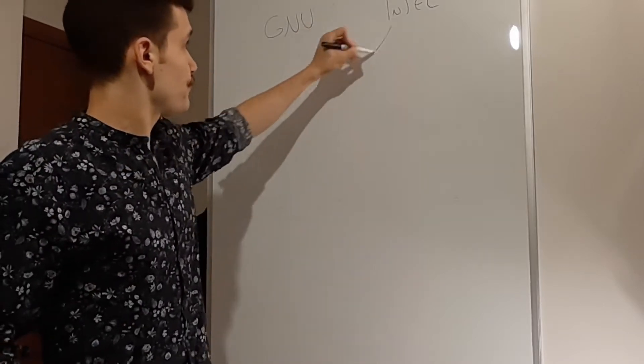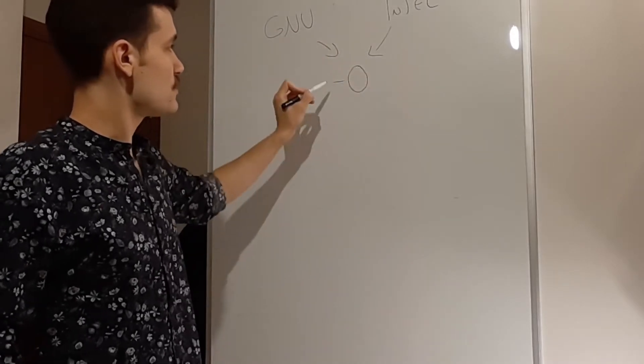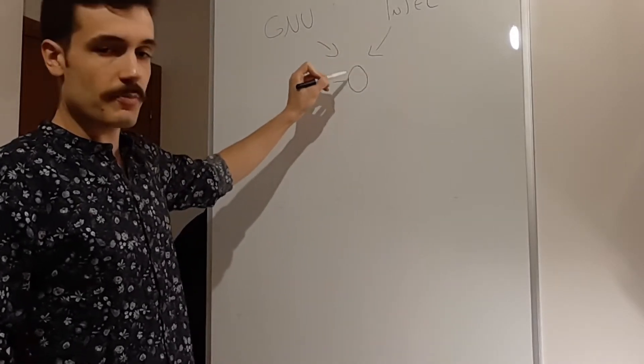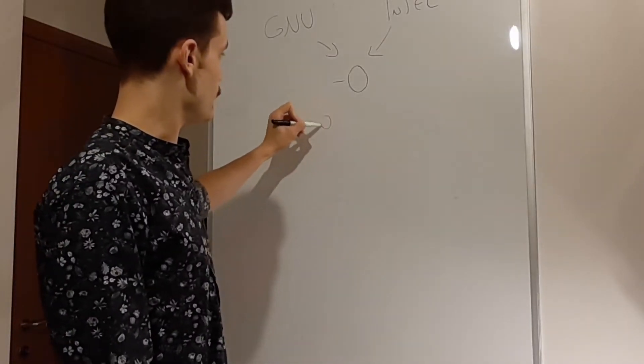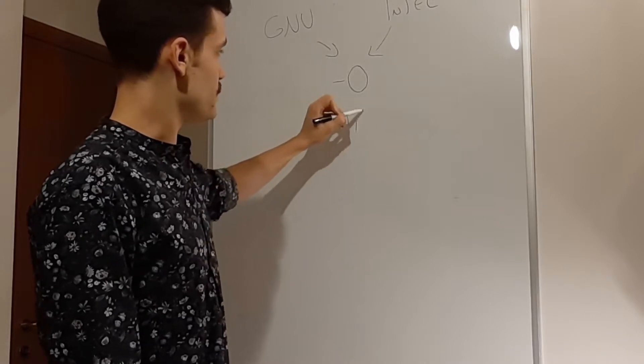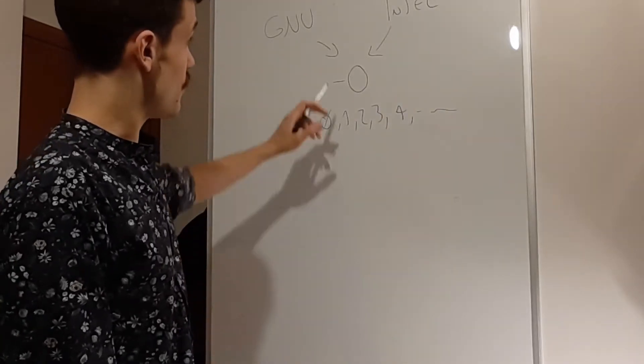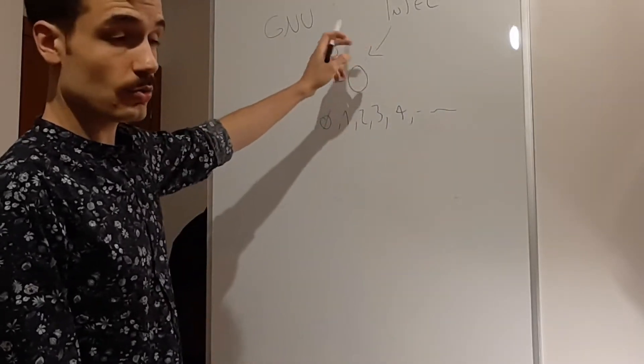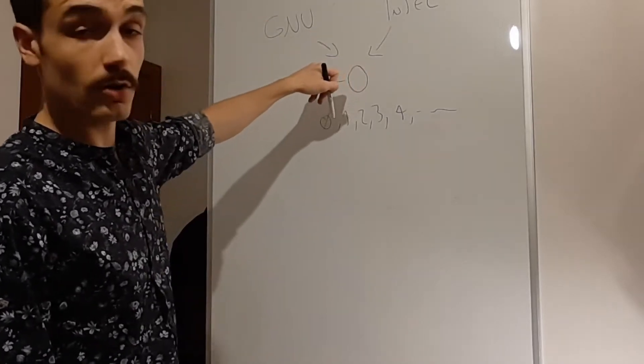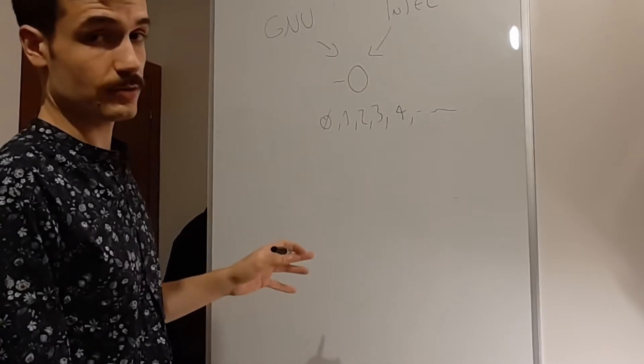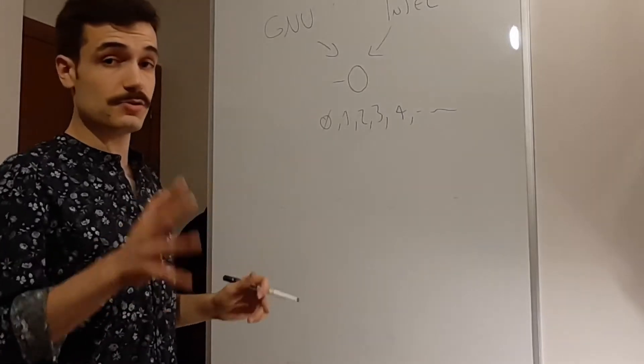In both the compilers, the flag to have optimizations is minus uppercase O, and that's the flag you will use, and then you will have different levels of optimization: 3, 4, etc. There is no one-to-one binding between GNU O1 and Intel O1. You will have to look at the documentation because there could be any kind of differences.